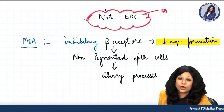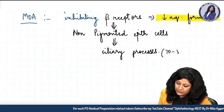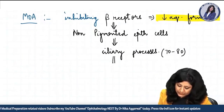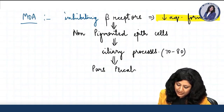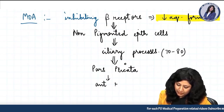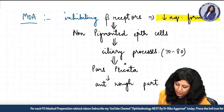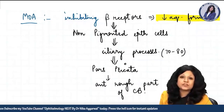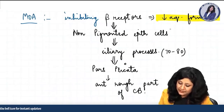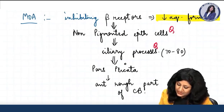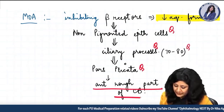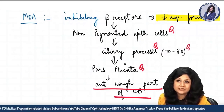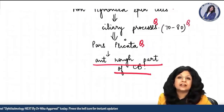The normal number of ciliary processes is about 70 to 80, and these ciliary processes are located on the pars plicata. Pars plicata is the anterior rough part of the ciliary body. Many exam questions can be asked about aqueous formation — the type of cells, type of processes, number of processes, and the part of the ciliary body containing these receptors.